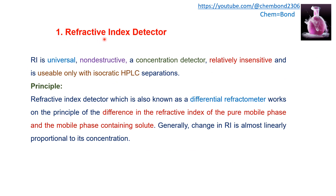The first bulk property detector is the refractive index detector. It is a universal, non-destructive concentration detector that is relatively insensitive and usable only with isocratic HPLC separation. The basic principle of the refractive index detector, also known as a differential refractometer, is the difference in the refractive index of the pure mobile phase versus the mobile phase containing the solute. Generally, the change in refractive index is almost linearly proportional to the concentration of the solute in the mixture.